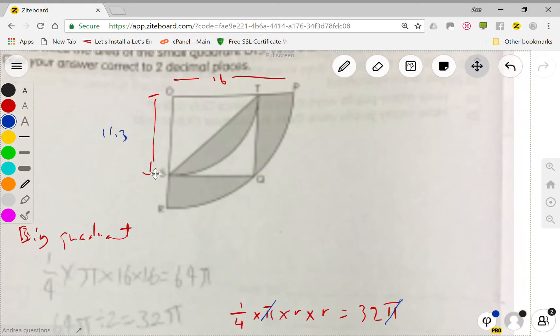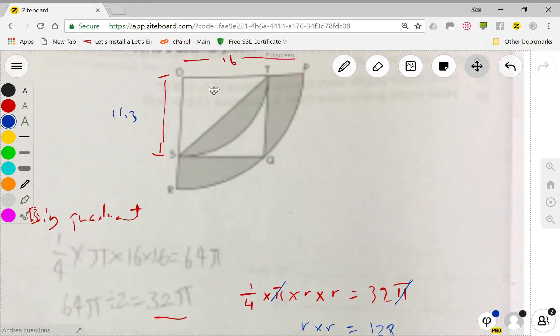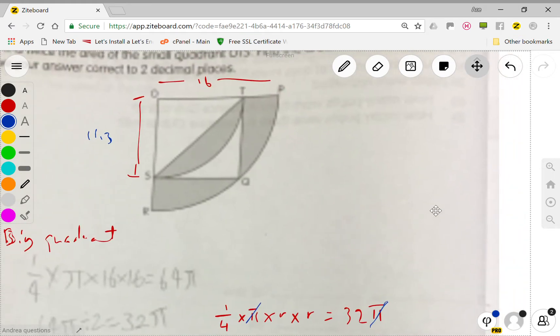So what is the area of the square? It's 11.3 times 11.3, which is actually 128 cm square. So that's the area of the square OTQS.